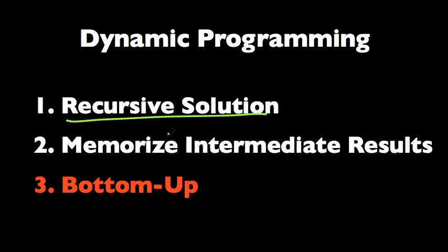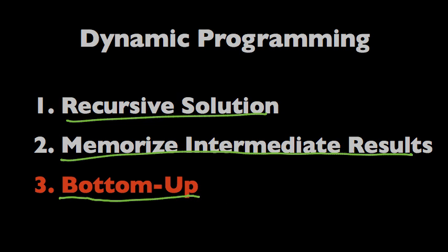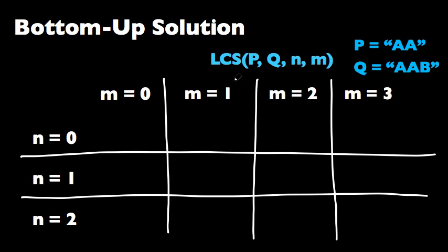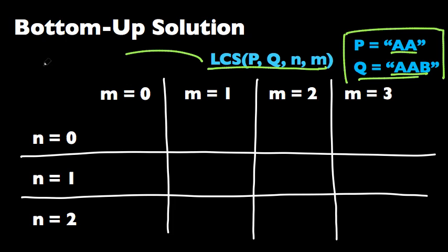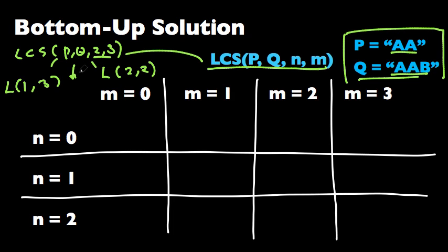So we found a recursive solution and we memorized intermediate results, and now we can come up with a bottom-up solution which is an optional step. In our recursive and memorized solutions, what we did was, let's just say for this particular example P equals AA and Q equals AAB, what we did was we called LCS of P, Q, 2, 3, and we said okay to find this we need to call LCS of P, Q, 1, 3 and LCS of P, Q, 2, 2 and so on. So we started at the top and we went down, so it's a top-down approach. We can also use a bottom-up approach. So start with M equals 0 and N equals 0 and ask ourselves...